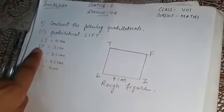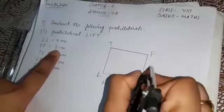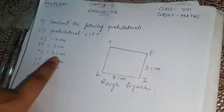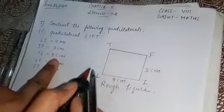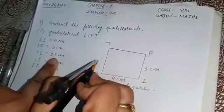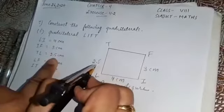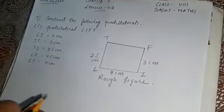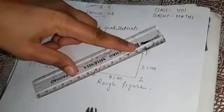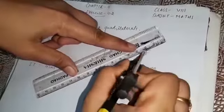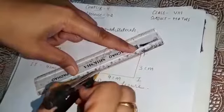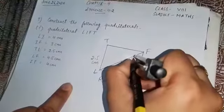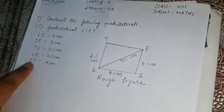LI is 4 centimeters. IF is 3 centimeters. TL is 2.5 centimeters — this side is 2.5 centimeters. Now LF is 4.5 centimeters. LF is a diagonal, so let's join LF — this side is 4.5 centimeters.